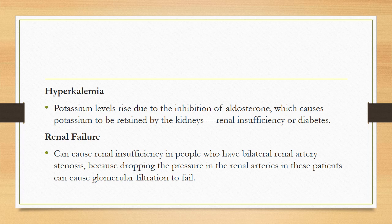Another common side effect is hyperkalemia — potassium levels may rise due to inhibition of aldosterone, which causes potassium to be retained by the kidneys. Since aldosterone normally retains sodium and excretes potassium, when aldosterone is inhibited, potassium will be retained. This occurs most often in patients with renal insufficiency or diabetes. Renal failure may also occur, particularly in patients with bilateral renal artery stenosis, as dropping pressure in the renal arteries can cause glomerular filtration to fail.